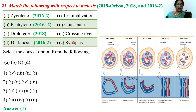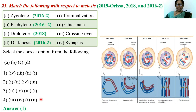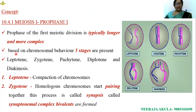Terminalization of chiasma takes place during diakinesis — it is the end of prophase I. To summarize: zygotene involves formation of synapse; pachytene is where crossing over takes place; diplotene is where chiasma formation is associated; diakinesis is where terminalization takes place. The answer is option 1. This concept is related to NCERT.